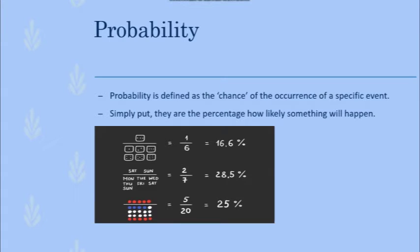Probability is the numerical description of how likely a particular event is going to occur, like the chances of something happening. The scale of it is usually defined from 0, which is never, to 1, which is always.